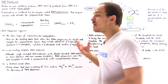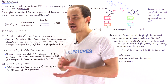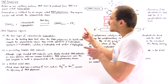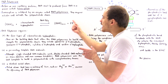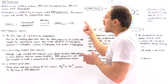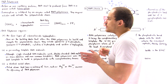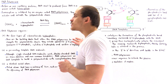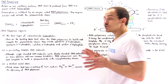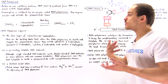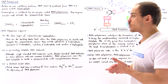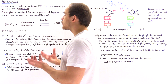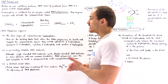PP stands for pyrophosphate. It's the breakdown of the pyrophosphate that drives this transcription reaction forward, as we'll discuss in more detail when we discuss the process of transcription.